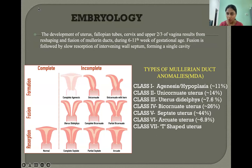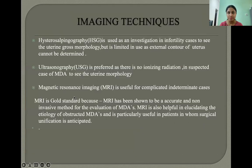The types of Mullerian duct anomalies are: class 1 is agenesis or hypoplasia, class 2 is unicornuate uterus, class 3 is uterus didelphys, class 4 is bicornuate uterus, class 5 is septate uterus, class 6 is arcuate uterus, and class 7 is T-shaped uterus. This illustration shows the different types of Mullerian duct anomalies.